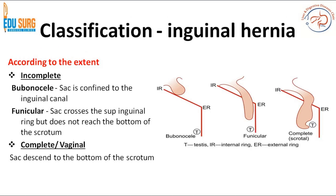Based on the extent of the hernia: if the hernia sac is confined to the inguinal canal and does not reach the external inguinal ring, it is known as a bubonocele — an incomplete hernia. If it crosses the external ring but does not reach the bottom of the scrotum or testes, this is the funicular type. The complete hernia, where the sac descends to the bottom of the scrotum, is also known as a scrotal or vaginal hernia.